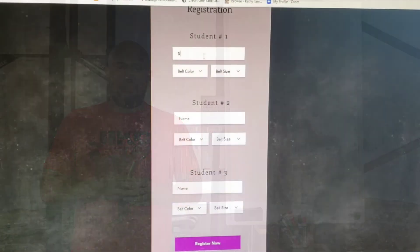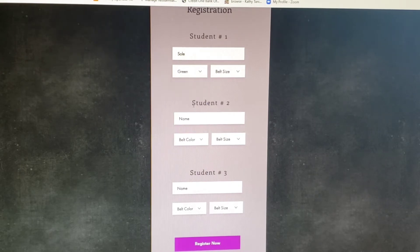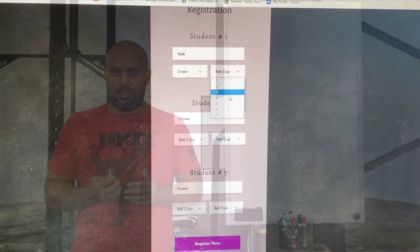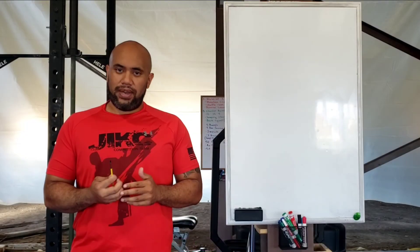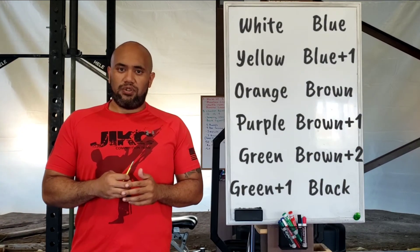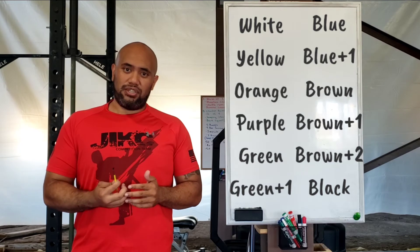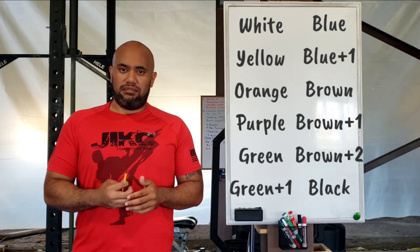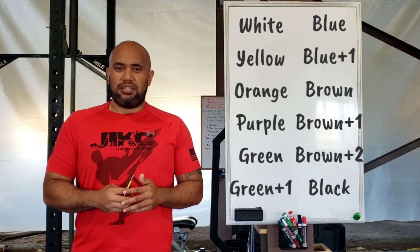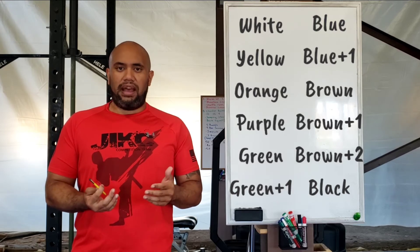If you are a green belt with one patch, you put green plus one. If you have no patch, you put green. If you are a blue belt with one patch, blue plus one. Blue belt with no patches, blue. Brown belt with one patch or two patches, it's brown plus one or brown plus two. Brown belt with no patches, just brown. And black belts, regardless of whatever patches you have, you just put black.